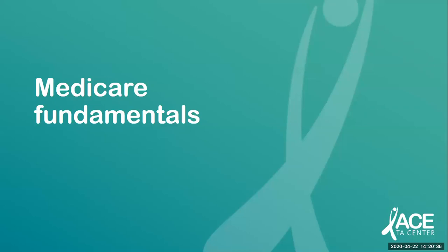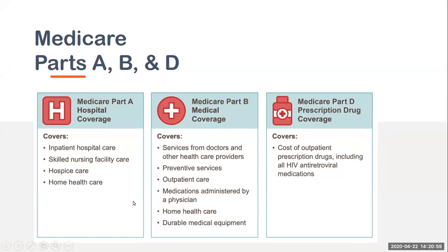Thanks for that overview, Liesl. There are four parts of Medicare. Medicare Part A is hospital coverage — this covers inpatient hospital care, surgery, lab tests, hospice care, and home health care, among other things. Medicare Part B is medical coverage, which includes services from doctors and other health care providers, including outpatient care and some preventative services. Medicare Part B also covers medications administered by a physician and durable medical equipment. We're chatting out links with more info on what Medicare Parts A and B cover. There's also Medicare Part D, which provides coverage for outpatient prescription drugs, including HIV antiretroviral medications.